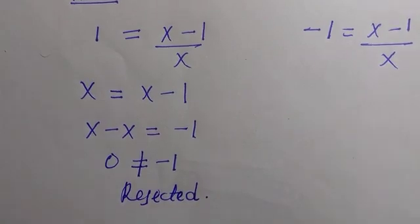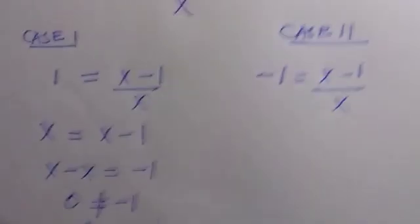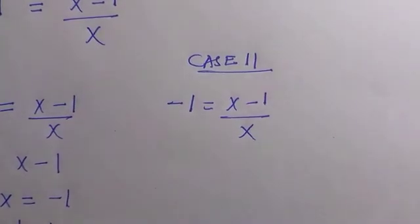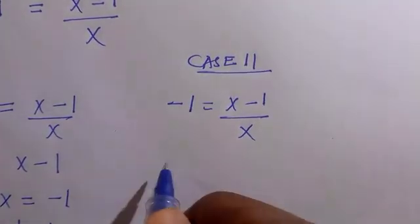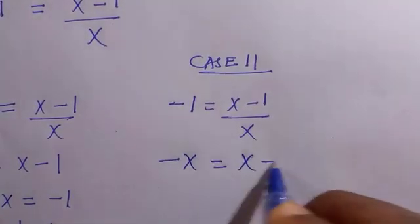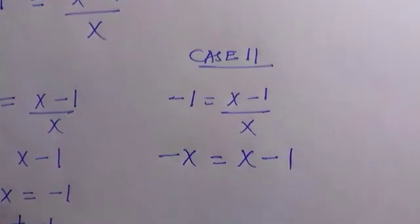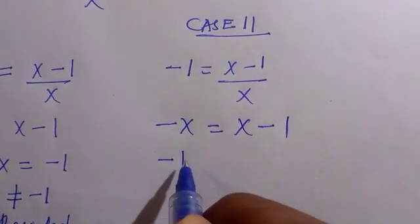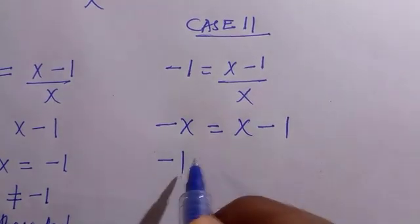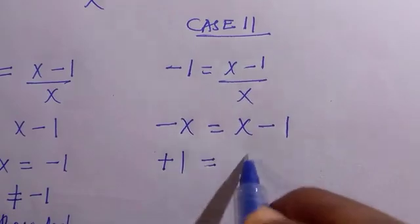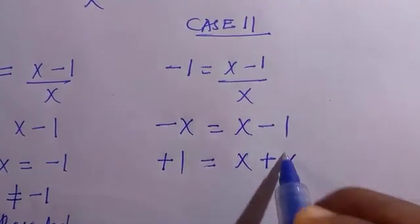We take a look at the second case, which is minus 1 equals (x minus 1) over x. We apply the same process by cross multiplying. We have minus x equals x minus 1. I take minus 1 to this side, and it becomes plus 1, equals x plus x.